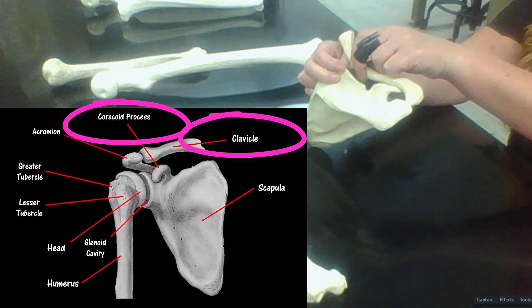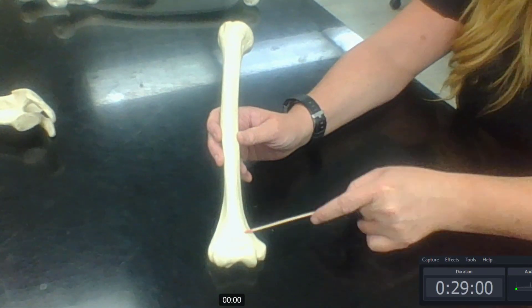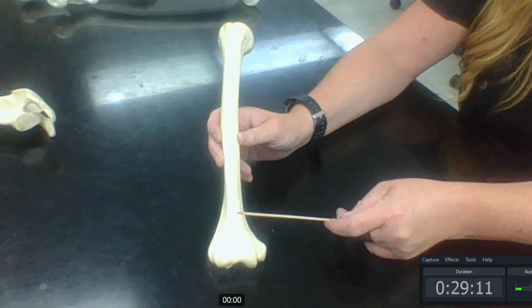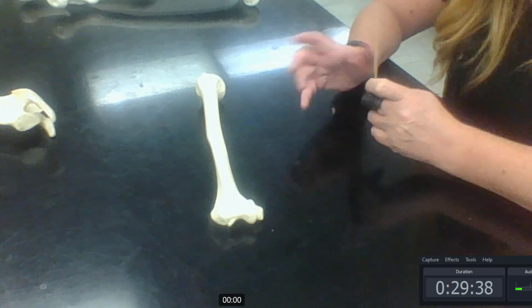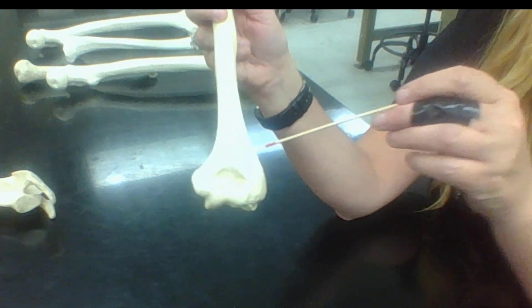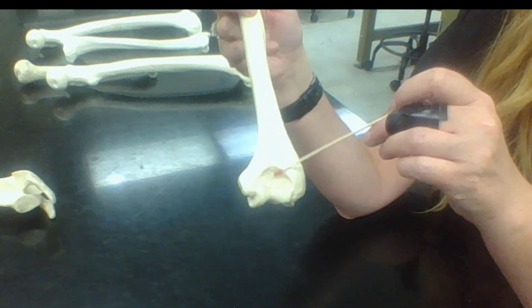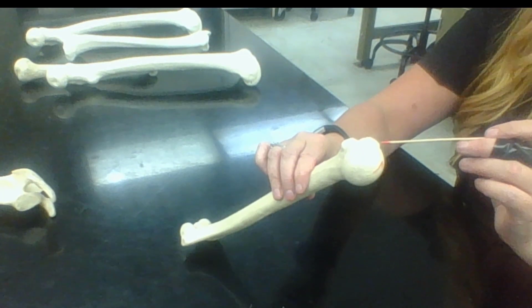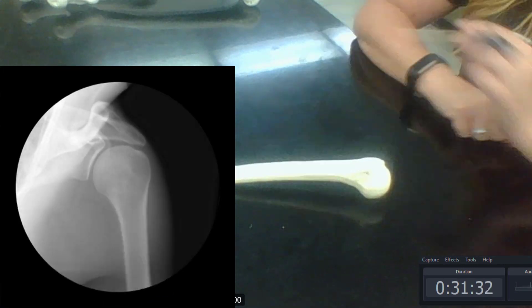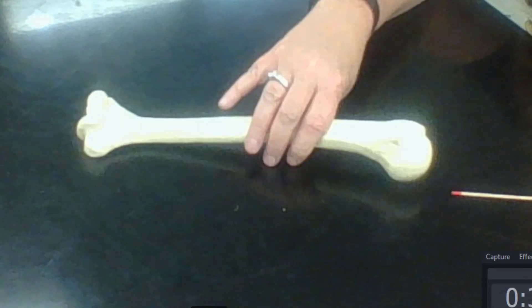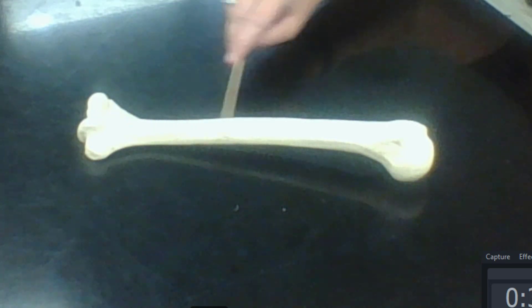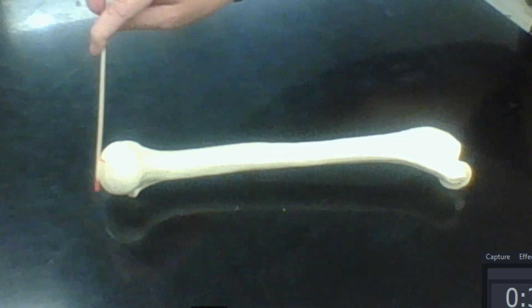One issue people have on practical exams is distinguishing the anterior from the posterior aspect of the humerus. On the anterior side there is a pronounced but relatively small fossa; on the posterior side this fossa is significantly larger. A useful tip: when the humerus is laid on a table and the head is touching the table, you are looking at the anterior aspect. If the head is not touching the table, it is the posterior aspect.